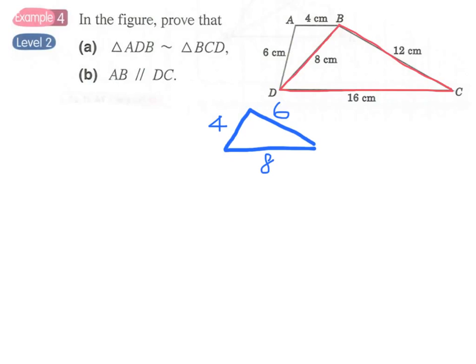Therefore we can conclude that these two triangles are similar. So this will be angle D, this will be angle A and this one angle B.